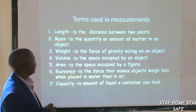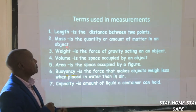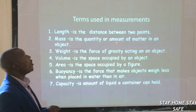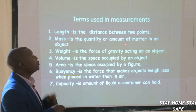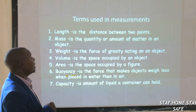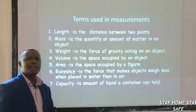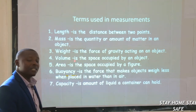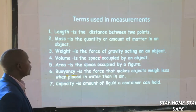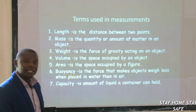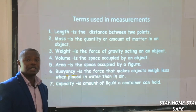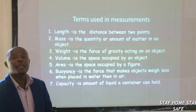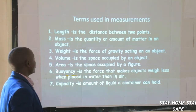Now, we have another one called mass. What is mass? Mass is the quantity or amount of matter in an object — the amount of matter in any object. And what is weight? Weight is the force of gravity acting on any object.